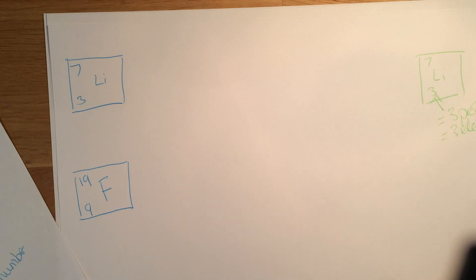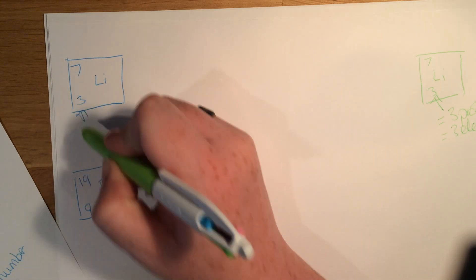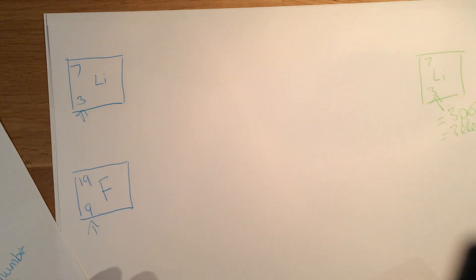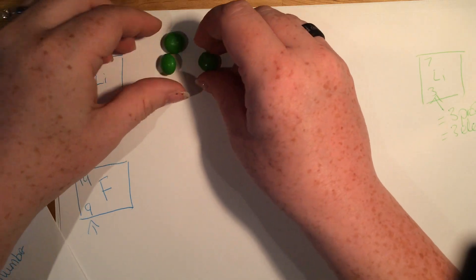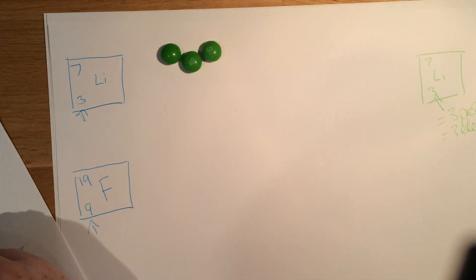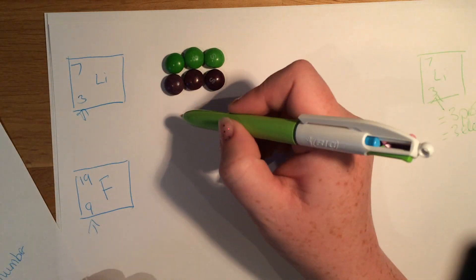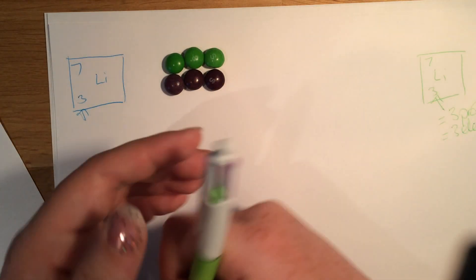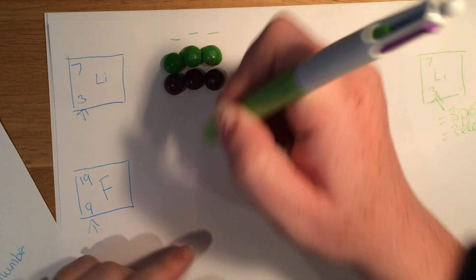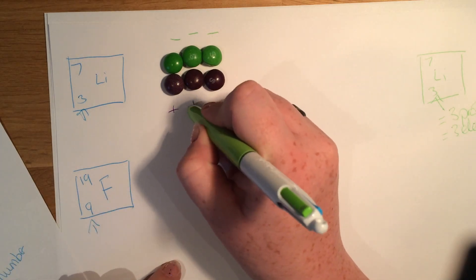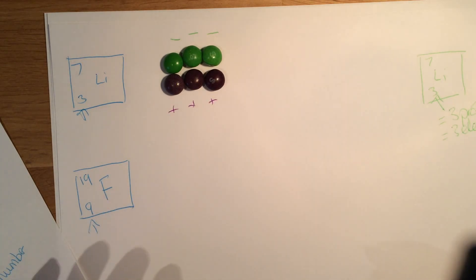Here we've got two more examples, lithium and fluorine, and again it is this number here that we are looking for. This is equal to the number of protons and the number of electrons. So lithium has three electrons and three protons — three positive charges, three negative charges — and they cancel each other out, so there is no overall charge.